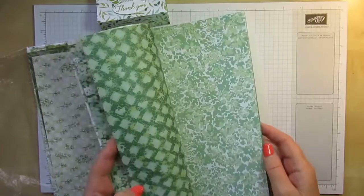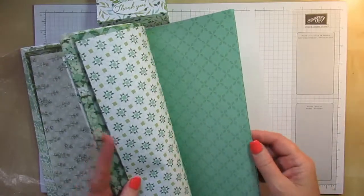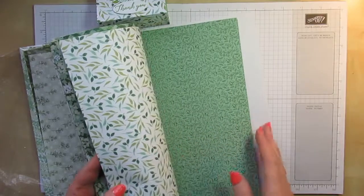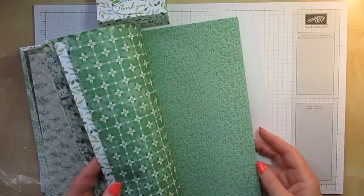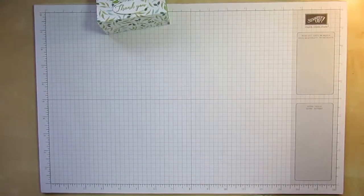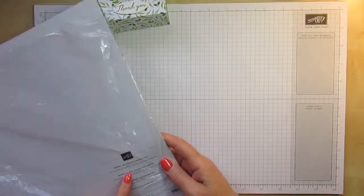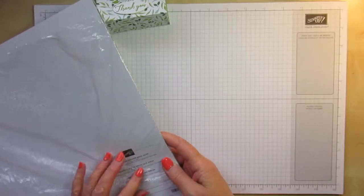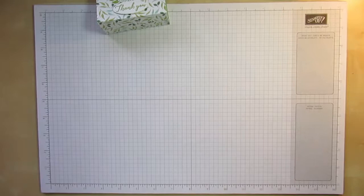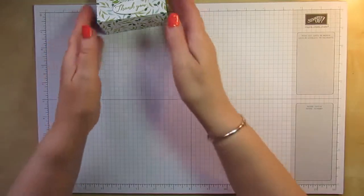Just very quickly let me see the rest. Absolutely beautiful. And the greens that are in it are Garden Green, Mint Macaron, Mossy Meadow, Pear Pizzazz, and Soft Sea Foam. And the only other color that's in there is Whisper White.